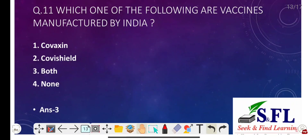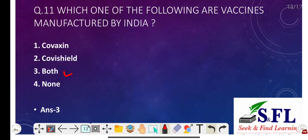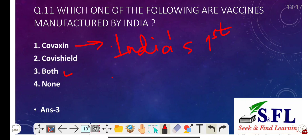Question number eleven: Which of the following vaccines are manufactured by India? The options are Covaxin, Covishield, both, and none. The correct answer is option three, that is both. Covaxin and Covishield are both manufactured in India, but India's first indigenous COVID vaccine was developed by Bharat Biotech, and that is Covaxin — India's first indigenously manufactured vaccine.